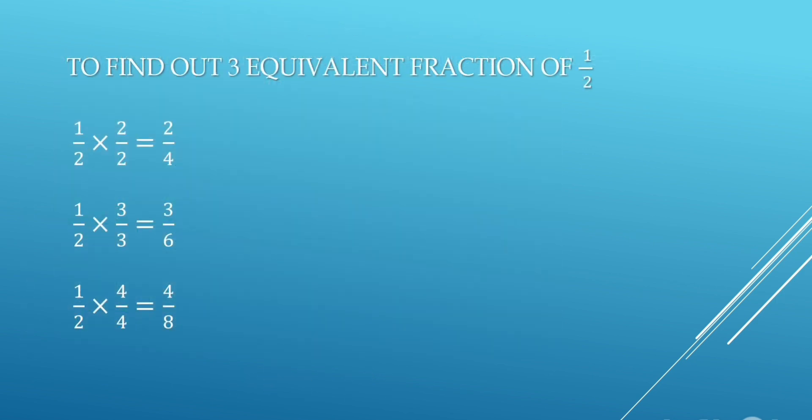To find equivalent fractions of any fraction, we multiply both numerator and denominator by the same number. Here, we have to find 3 equivalent fractions of 1 half. First, multiply both by 2: 1 upon 2 × 2 upon 2 equals 2 upon 4. Next, multiply both by 3: 1 upon 2 × 3 upon 3 equals 3 upon 6. Last, multiply both by 4: 1 upon 2 × 4 upon 4 equals 4 upon 8. So equivalent fractions of 1 upon 2 are 2 upon 4, 3 upon 6, and 4 upon 8.